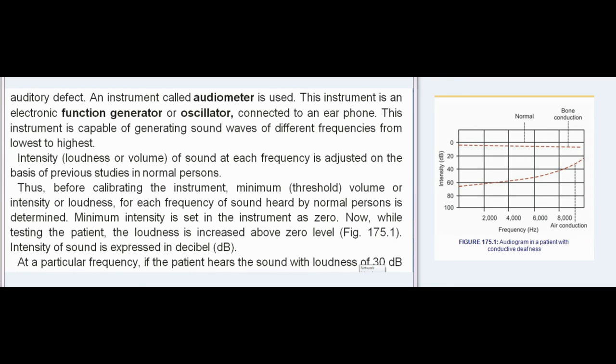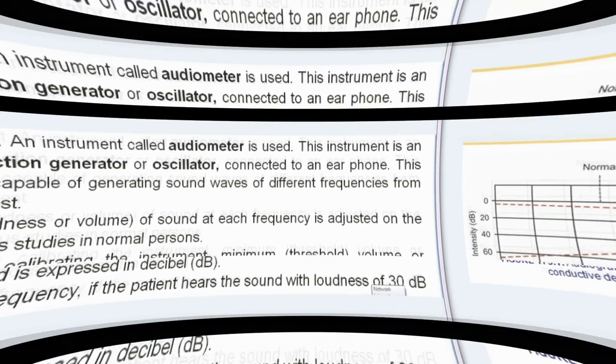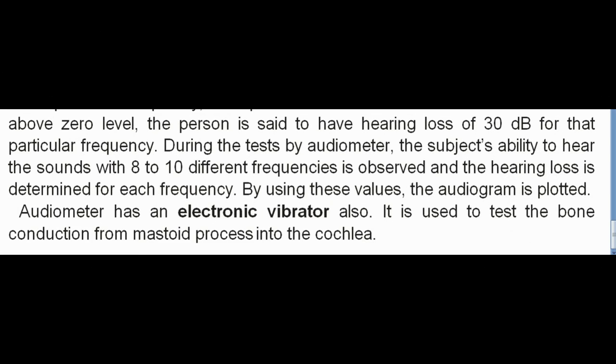While testing the patient, the loudness is increased above zero level. Intensity of sound is expressed in decibels (dB). At a particular frequency, if the patient hears the sound with a loudness of 30 dB above zero level, the person is said to have a hearing loss of 30 dB for that particular frequency.